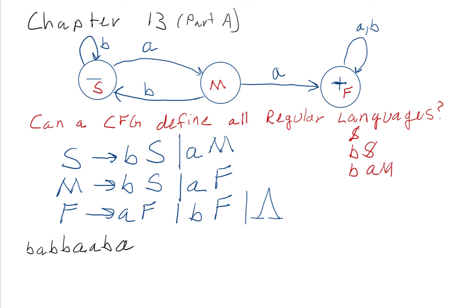we replace it with bS, then we replace the S with aM, and then we got another b there, so we replace the M with bAbS. Then the next b, right here, we're going to replace this S with another bS, and that would leave us with b a b b S.